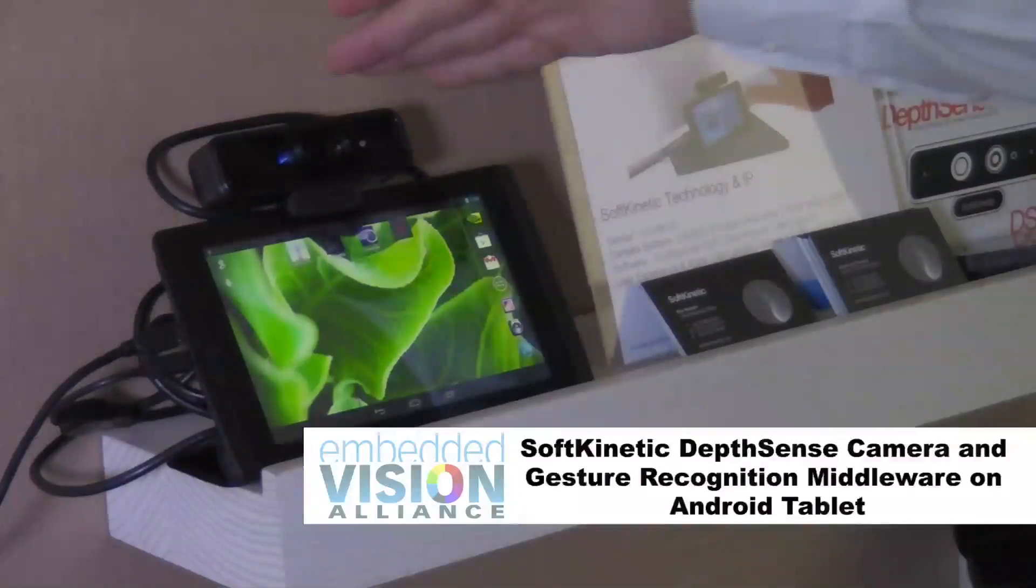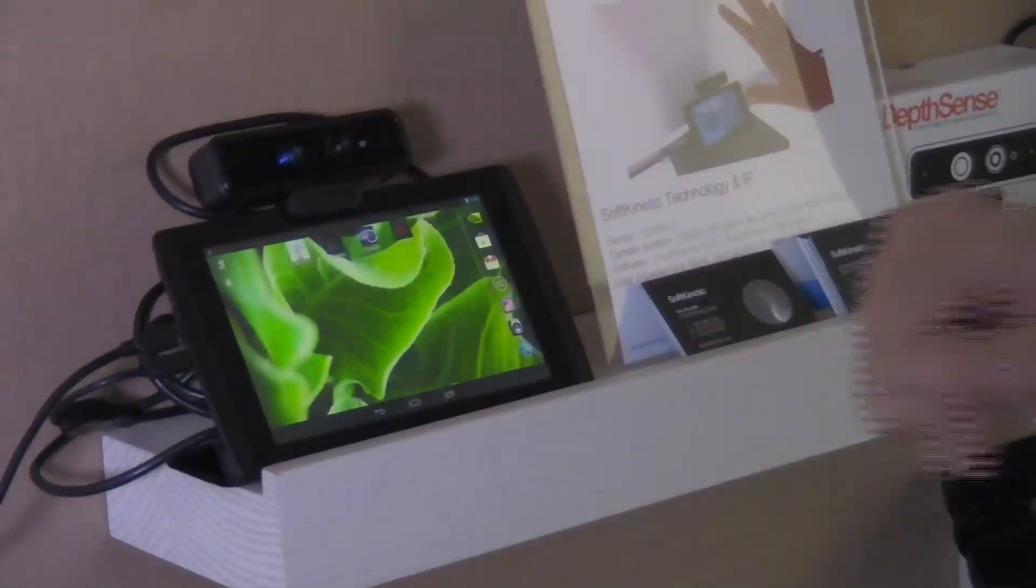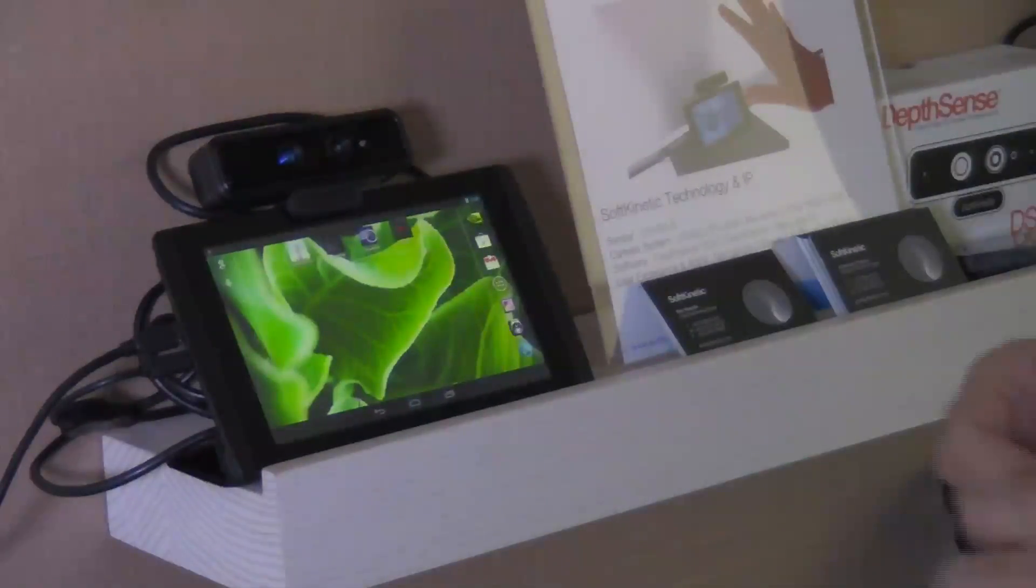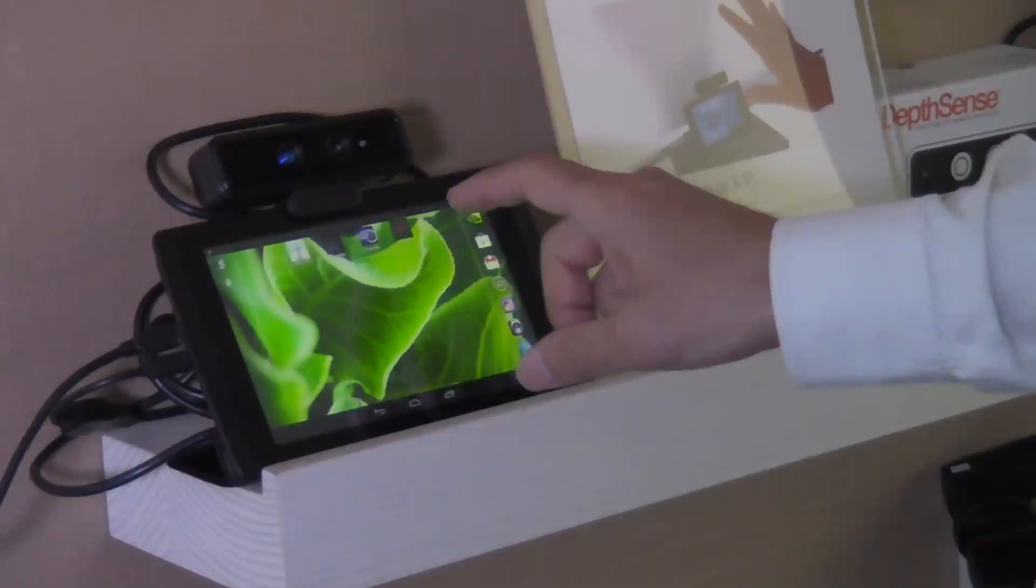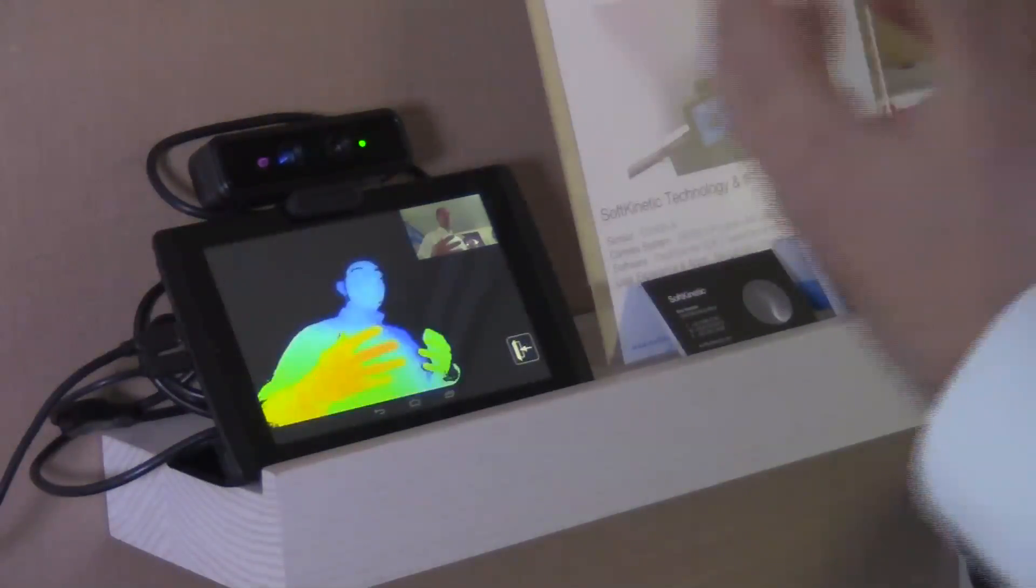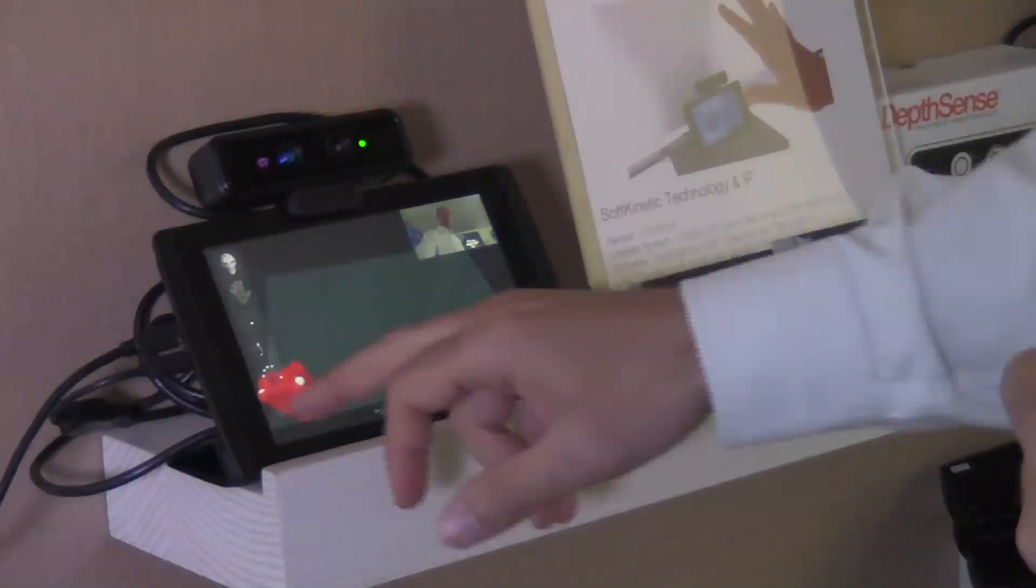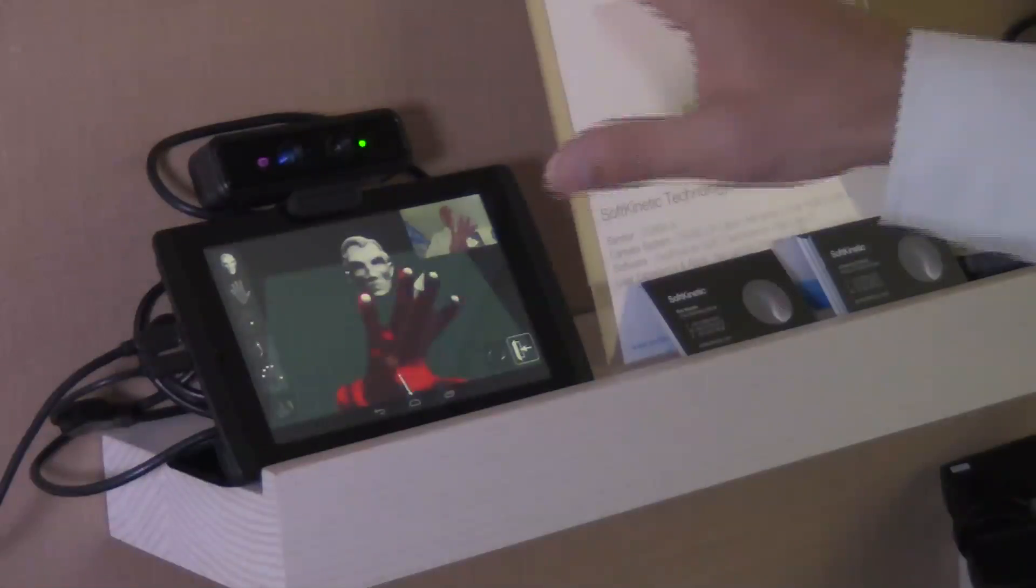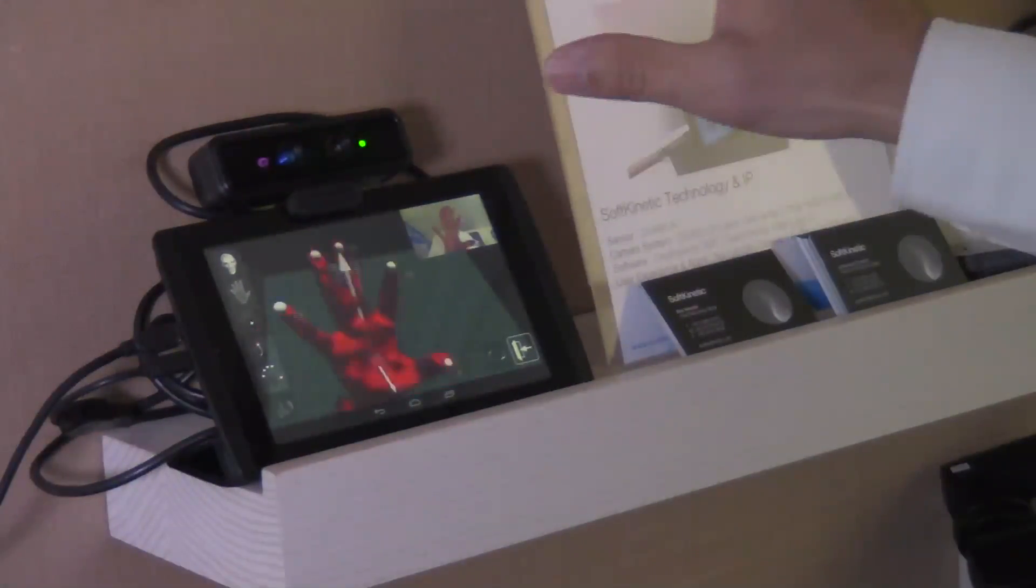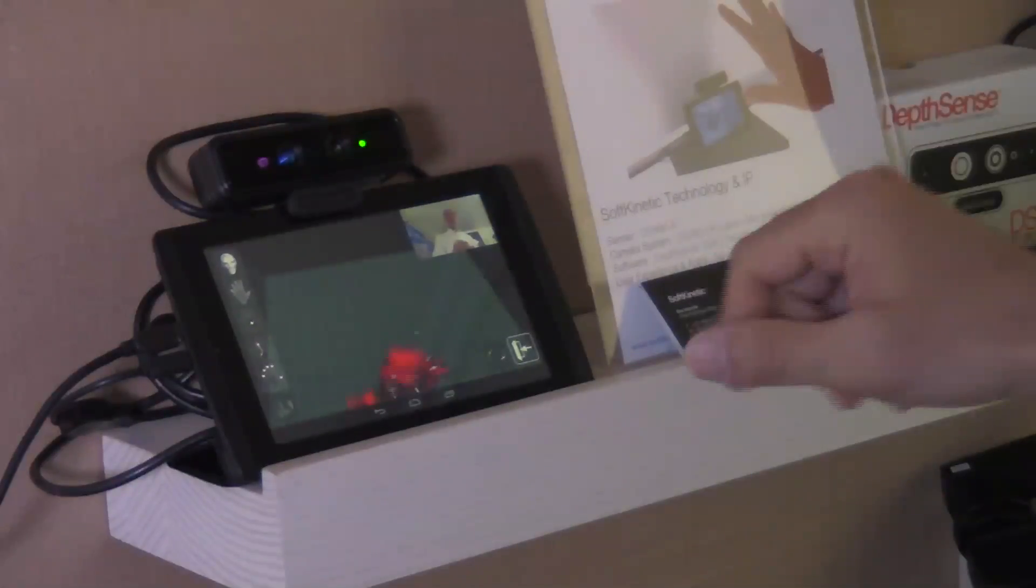So what we have here is our DepthSense 325 short-range camera, hooked to an NVIDIA tablet on Android. And on the tablet, we are running our close interaction library, to do hands, finger, and head tracking. So what you can see here is the depth map. So the raw information coming out of the sensor, together with the RGB stream. And so on top of that, we start then tracking hands, head, and finger. As you can see, we have the hand volume. We have the finger-tip tracking. We have the palm orientation. We also have the hand openness to be able to grab an object, drag it, and release it.